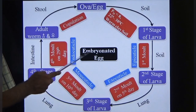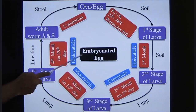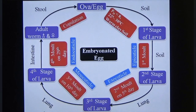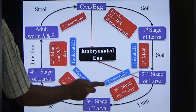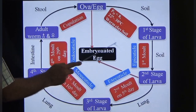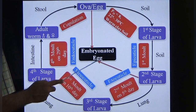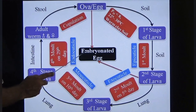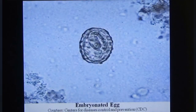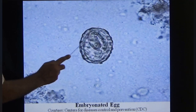A very important term: the embryonated egg is the fertilized ovum containing the second stage larva (L2) inside. This is the infective form for humans. The ova must contain the L2 larva to be infective — this is what we call the embryonated egg.